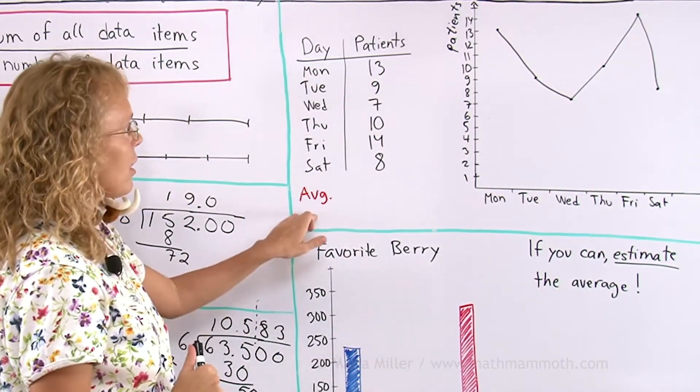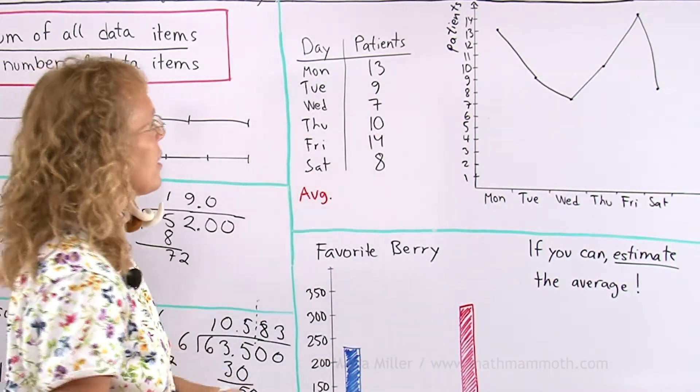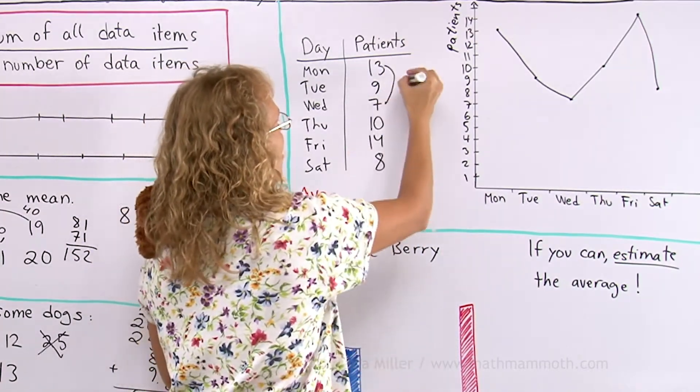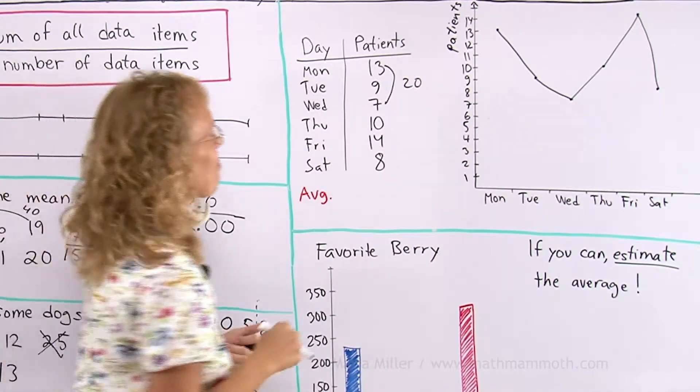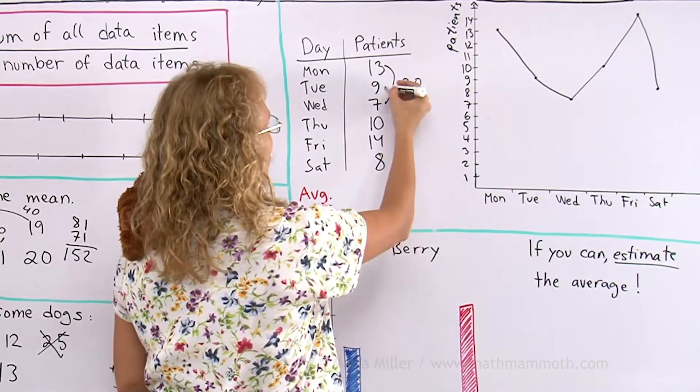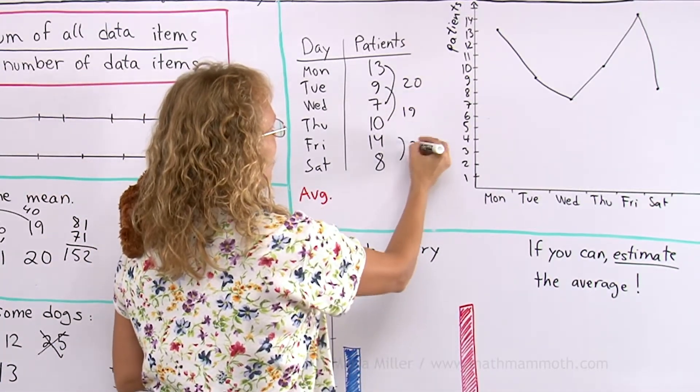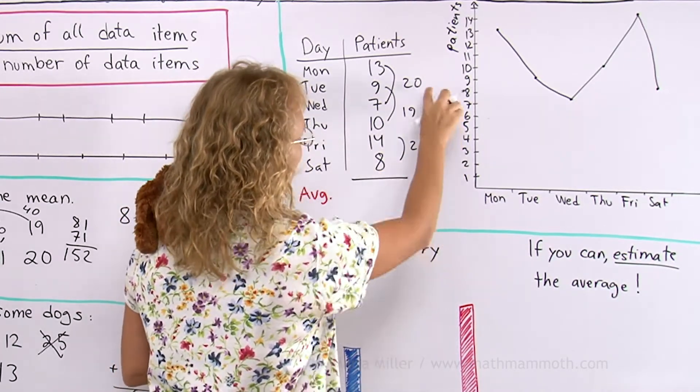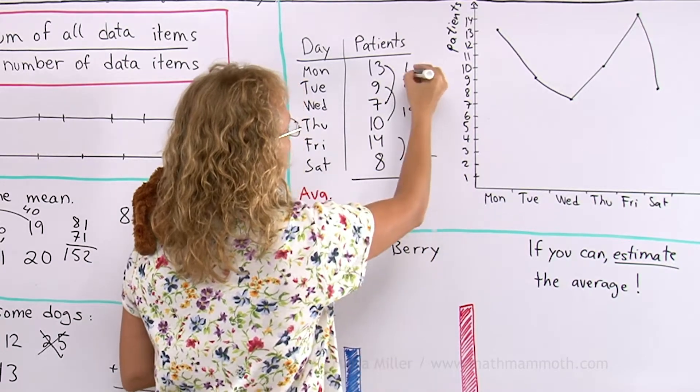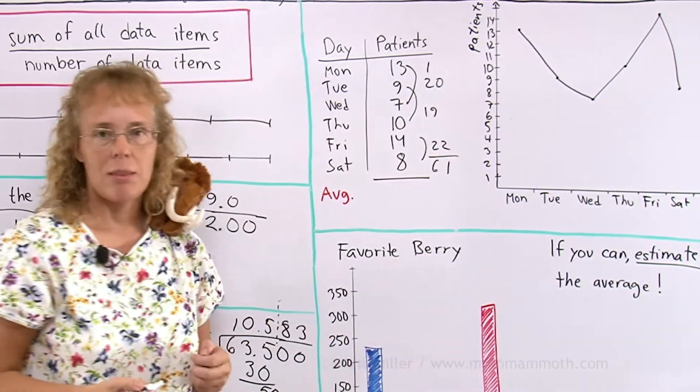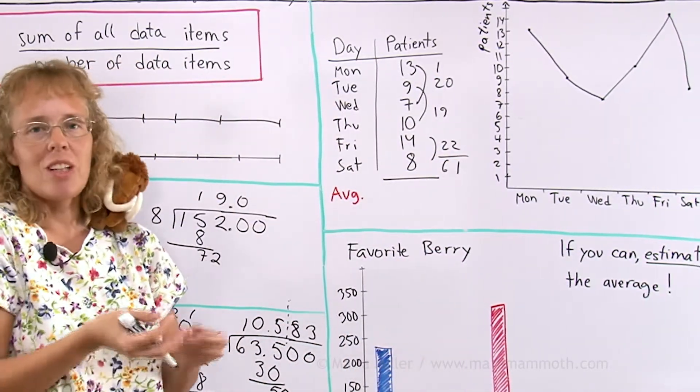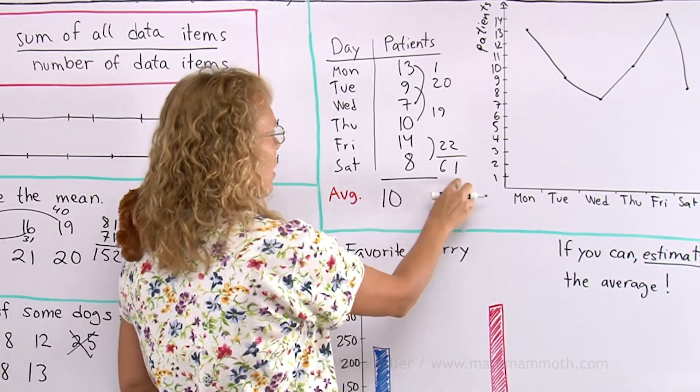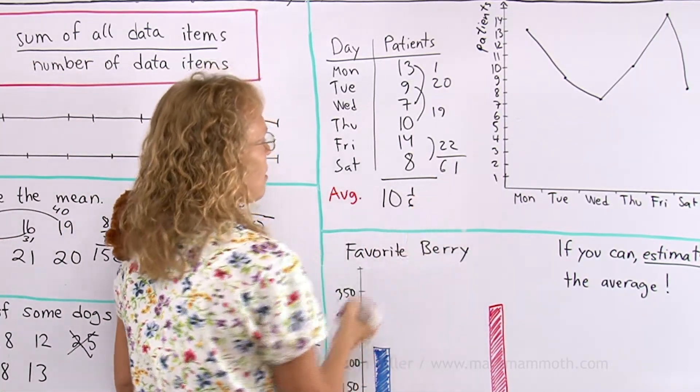And now let's calculate the average. We'll take these numbers and add them. Here's 20. These two make 20. You always want to look for pairs like that when you're adding. And then these two make 19. And these two make 22. Then add these. The sum is 61 divided by 6. But that's almost like 60 divided by 6 equals 10. And then 1 divided by 6 is 1 sixth. The average is just a little bit more than 10.